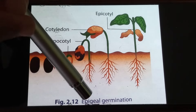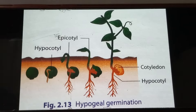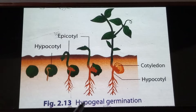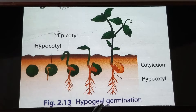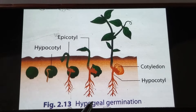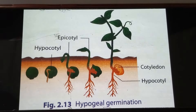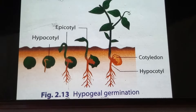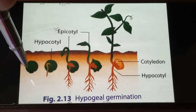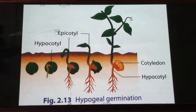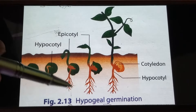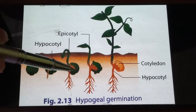Now we are going to see what is hypogeal germination. The word 'hypo' means below and 'geo' means soil. During germination, when the cotyledon remains below the soil, it is known as hypogeal germination. Throughout the entire process, the cotyledon remains inside the soil.